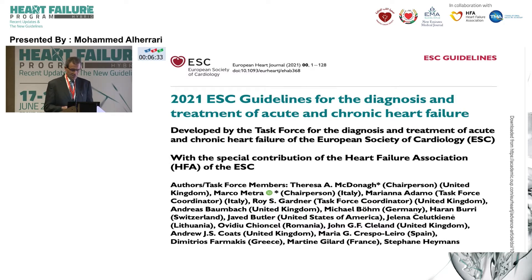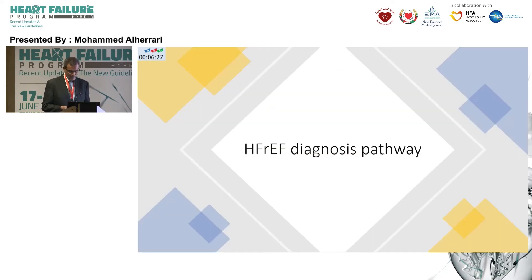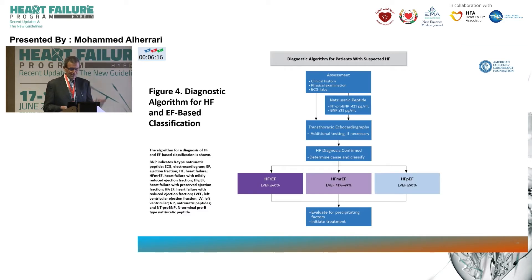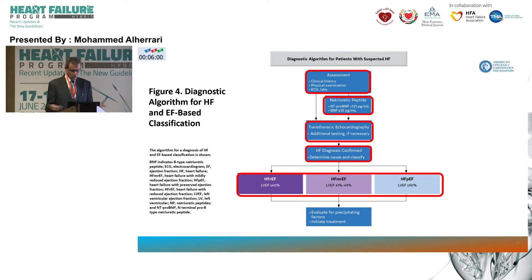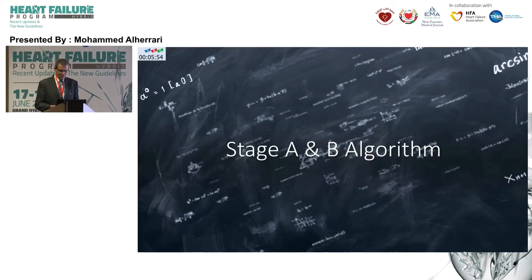Therefore, guidelines keep trying to incorporate all new recommendations and observations. We have the European Society of Cardiology guidelines from 2021, and the American guidelines just released in May this year. The diagnostic pathway is very similar to the European — you assess your patient, suspect heart failure, do ECG and natriuretic peptide. If abnormal, refer for echocardiography. If unavailable, refer to cardiology. Based on that, you determine ejection fraction and classify into one of the groups, find the etiology, and start treatment.